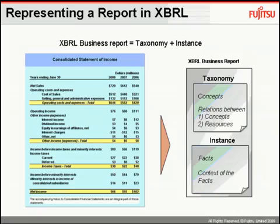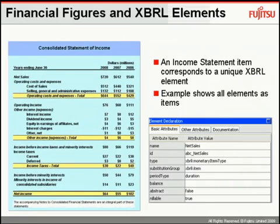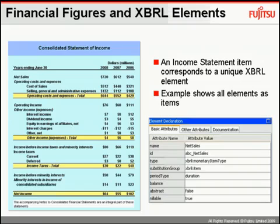Representing data in XBRL means that all the information currently in financials can be classified and represented in XBRL. Each unique financial concept or fact in a financial report is represented by a unique element in the XBRL taxonomy. This single financial fact is called an item. For example, in this income statement, all the financial facts are items.